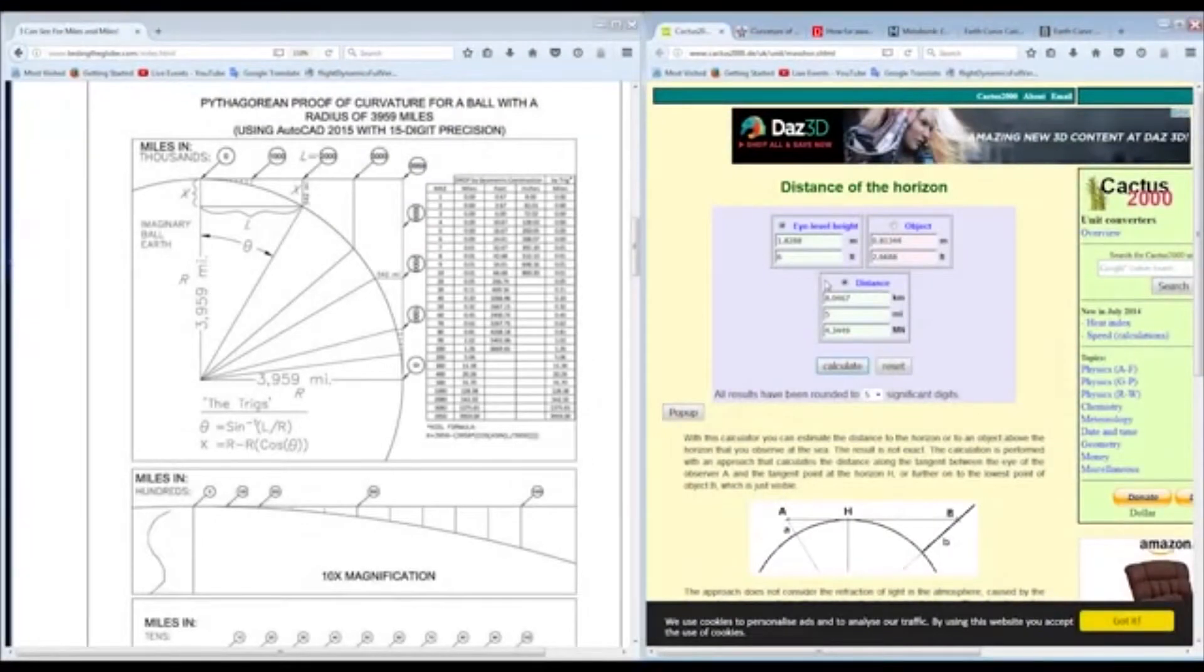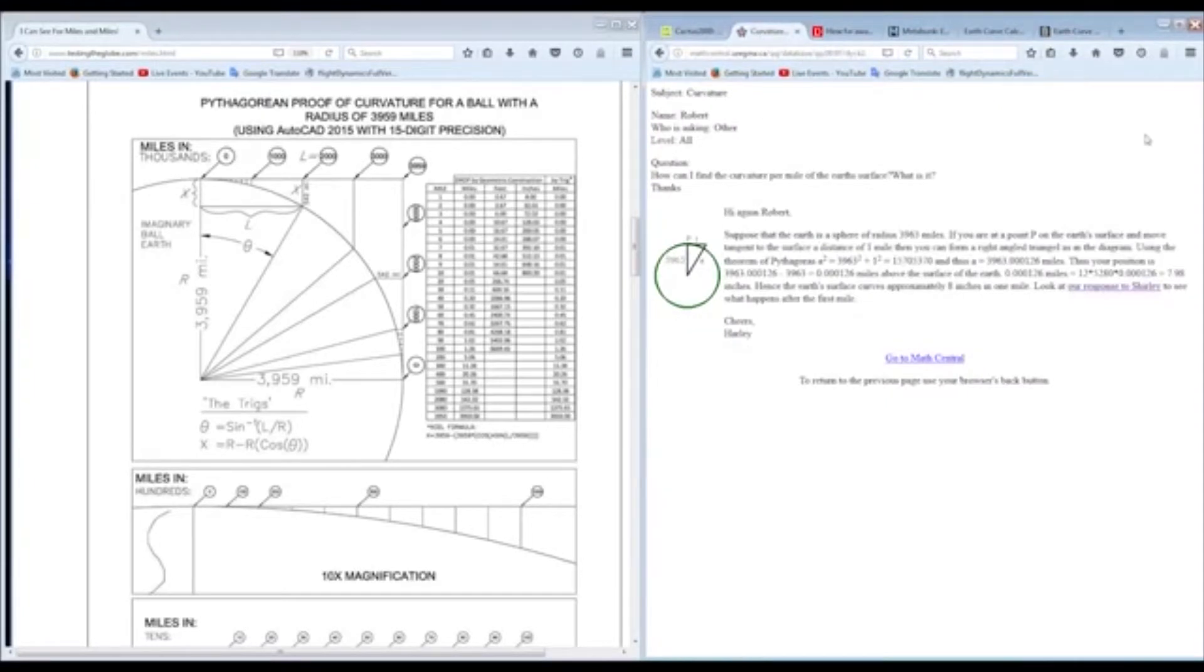While I was looking into curvature math and looking into stuff like this, I came across an interesting word problem which, ironically enough, absolutely nullifies the entire ball-earth thesis. And it does so using their math.